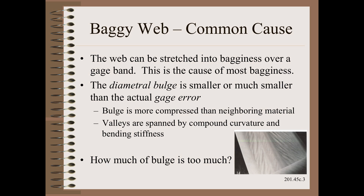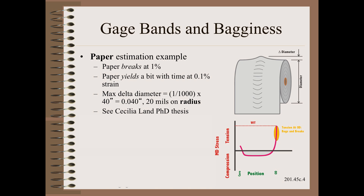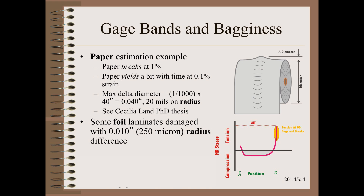How much of a roll diametral bulge and/or gauge variation is too much? Let us start with the diameter bulge and then proceed to the gauge bands. The first example calculation shows a prediction I made some time ago for paper: a bulge that is only 20 thousandths of an inch on a 40-inch diameter roll, or 500 microns on a 1-meter diameter roll, might begin to damage the paper. Cecilia Land published a marvelous Ph.D. thesis on this topic and verified those numbers are approximately correct. The worst case I ever saw was with a laminate that had a dead soft aluminum foil layer — a diameter variation of a mere 10 thousandths of an inch or 250 microns on a smaller roll was enough to destroy the web with bagginess.